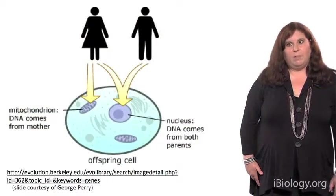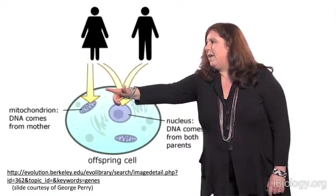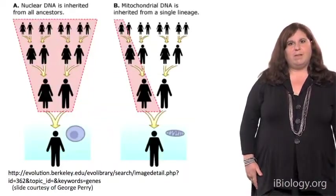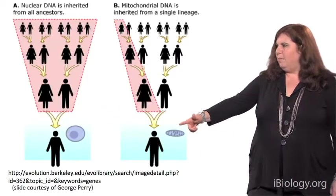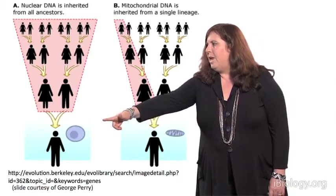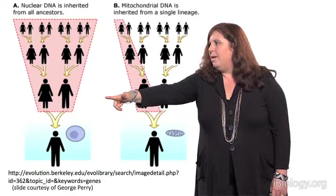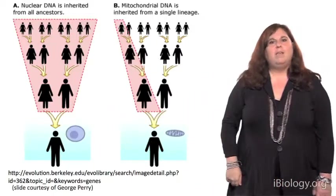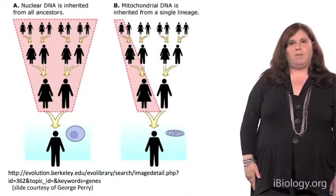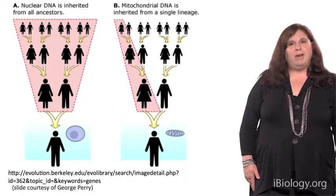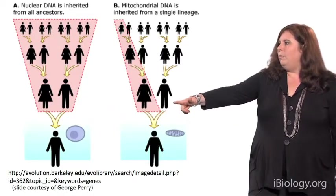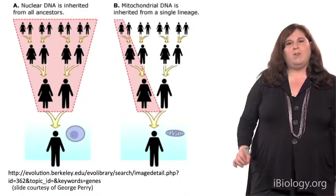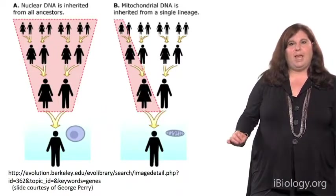The mitochondrial DNA is inherited through the maternal lineage, whereas the nuclear DNA is inherited from both parents. If we trace back from a present-day individual, they will have inherited their nuclear genome from their parents, who inherited from their parents, and so on — tracing back to a large number of ancestors. By contrast, if we're tracing back mitochondrial DNA lineages, they're only passed on through the maternal lineage, so they're essentially inherited from a single lineage.